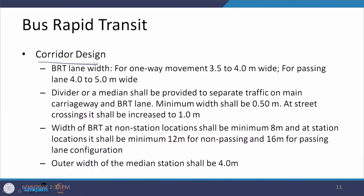For corridor design, we look at the lanes provided and their demarcation with respect to the main carriageway. The BRT lane width for one-way movement is 3.5 to 4 meters, but if there is a passing system it should be 4 to 5 meters wide. An island, divider, or median is needed to separate BRT lanes from main carriageway traffic — minimum width 0.5 meters, and 1 meter at crossing locations.